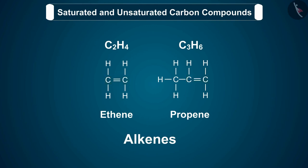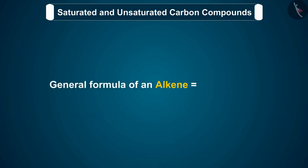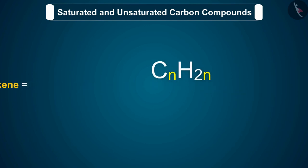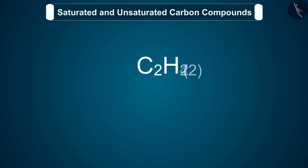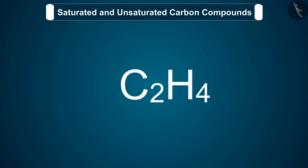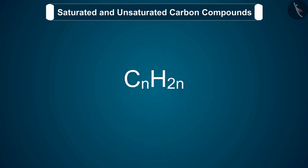There is also an interesting fact. There can be no alkene having only one carbon atom. The general formula of an alkene is CnH2n, where n is the number of carbon atoms in its molecule. If an alkene has two carbon atoms in its molecule, then n equals 2 and its molecular formula will be C2H4. Similarly, when n equals 3, we will get propene.